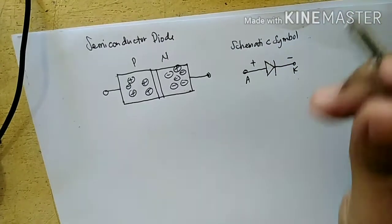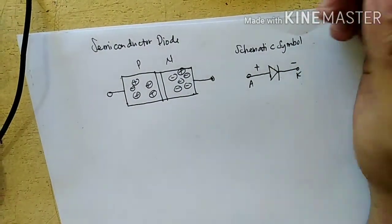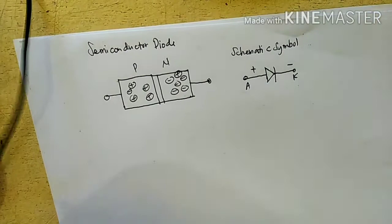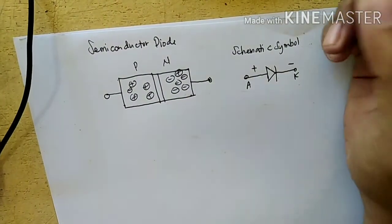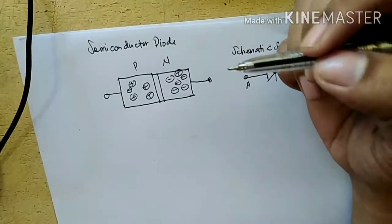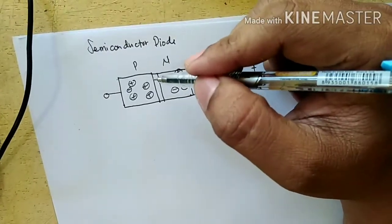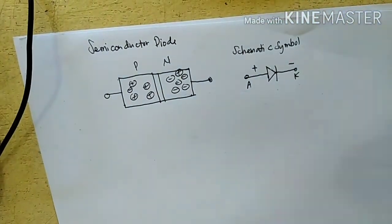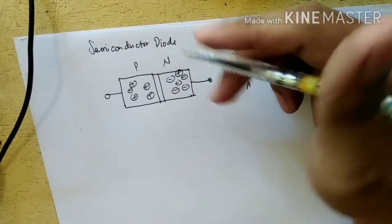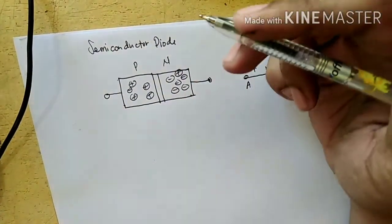Last meeting, we discussed about the construction of a diode where it was constructed by joining a P-type material and an N-type material, where P-type material has a majority carrier of holes and N-type material has a majority carrier of electrons which has a negative charge.